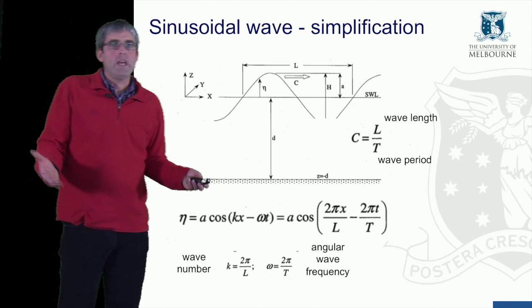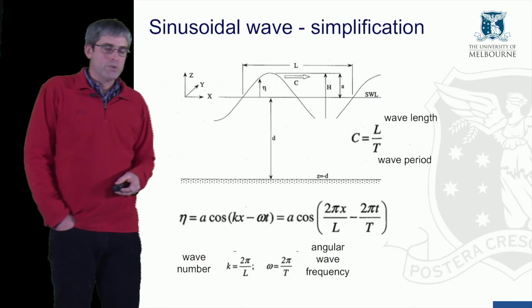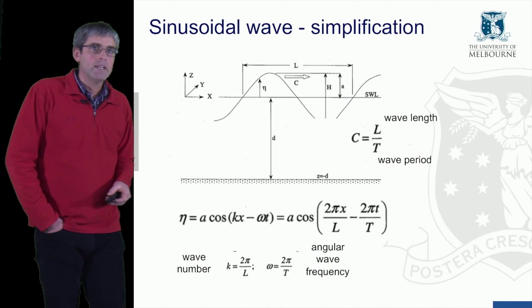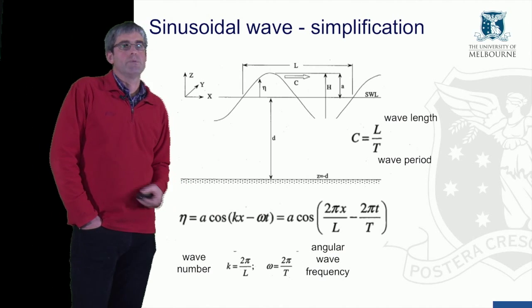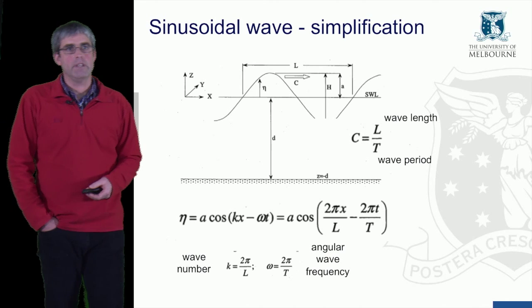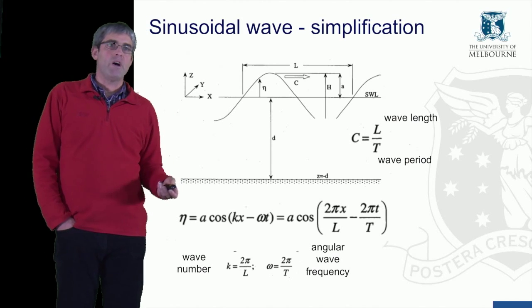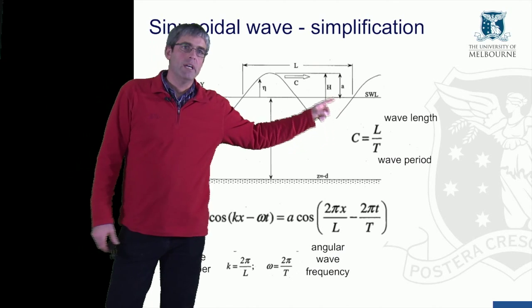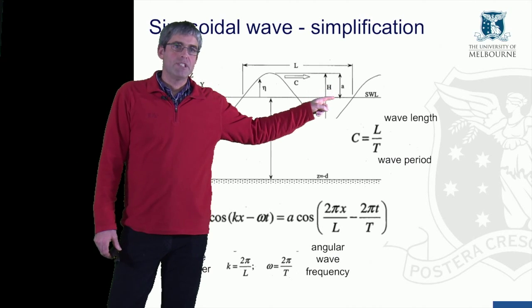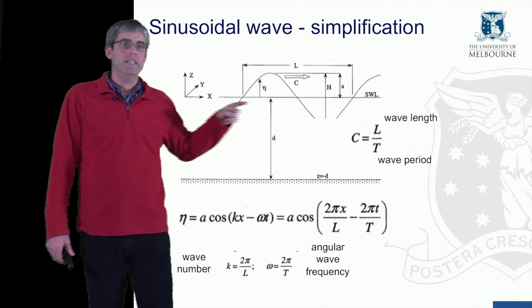Firstly we conceptualize a wave using a sinusoidal pattern, and here are the key variables in the wave theory. We've talked about wavelength already, the wave height, the wave amplitude A, and the still water level indicated here.